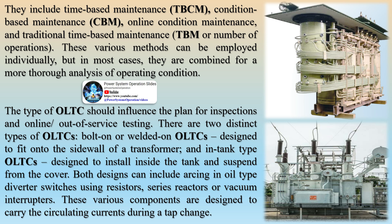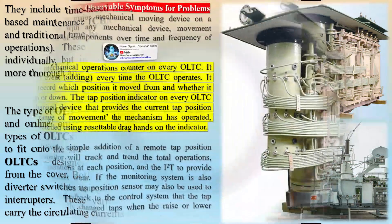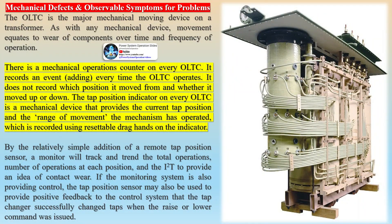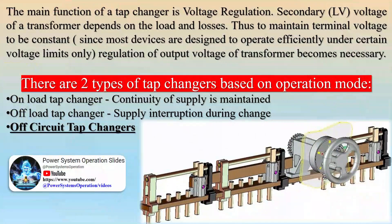The OLTC is the major mechanical moving device on a transformer. As with any mechanical device, movement equates to wear of components over time and frequency of operation. There is a mechanical operations counter on every OLTC that records an event cumulatively every time the OLTC operates — it does not record which position it moved from or whether it moved up or down. The tap position indicator on every OLTC is a mechanical device that provides the current tap position and the range of movement, recorded using resettable drag hands on the indicator.